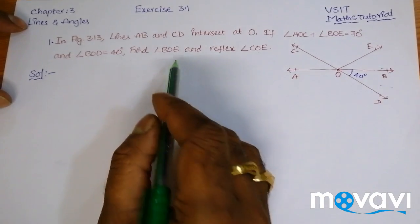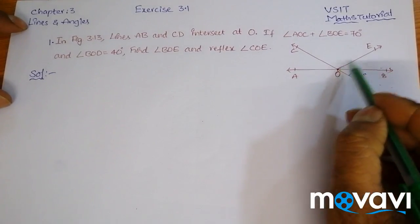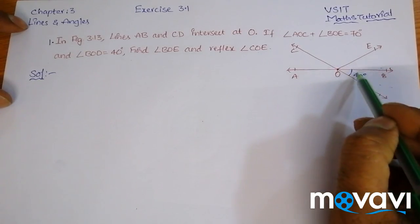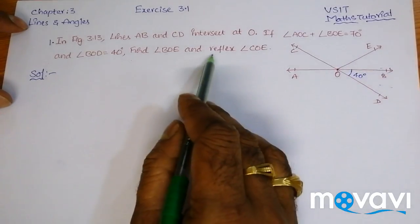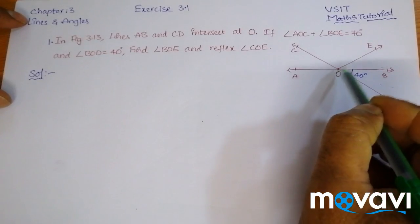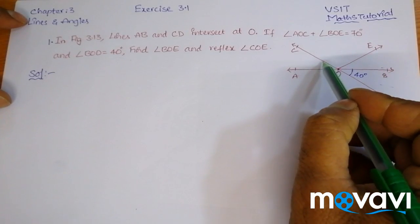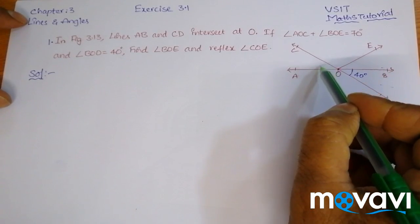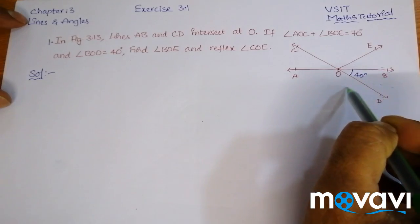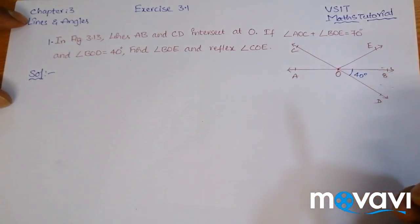Find angle BOE — that is this angle — and the reflex of angle COE, that is COE. We have to find the reflex angle, that is from here to here. So this is the angle we have to find.